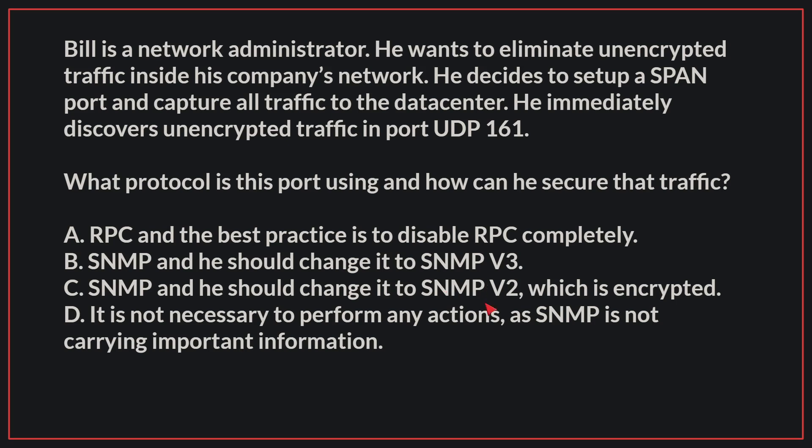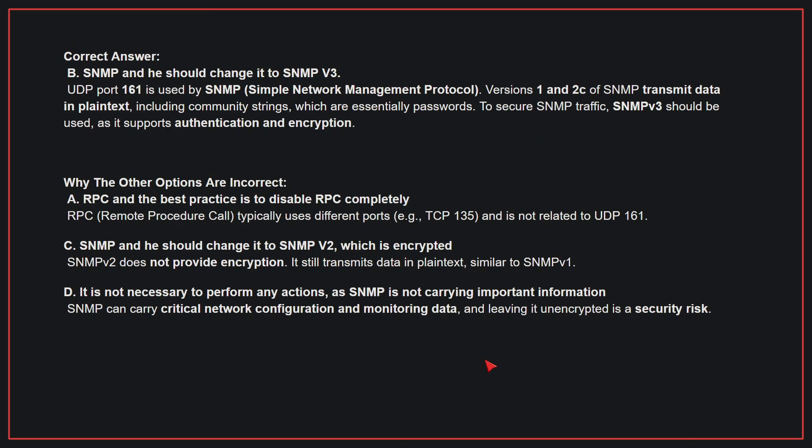The correct answer is B: SNMP, and he should change it to SNMPv3. UDP port 161 is used by SNMP. Versions 1 and 2c of SNMP transmit data in plain text, including community strings, which are essentially passwords. To secure SNMP traffic, SNMPv3 should be used, as it supports authentication and encryption.